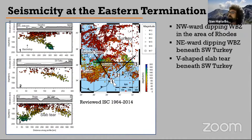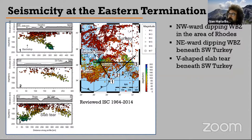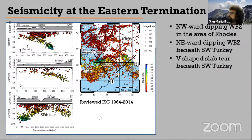Moving to the eastern termination, which is more relevant for today's workshop, we see beneath the Rodos area a clear northwest-dipping Wadati-Benioff zone, which is not compatible with a step fault along the Pliny Trench — because if a step fault were there, we would not expect subduction in that direction, yet seismicity shows it. We also see a northeast-dipping slab beneath Turkey, the Antalya slab, and between them an area depleted in intermediate-depth seismicity corresponding to the slab tear. This allows us to refine the geometry of the tear down to 180–200 km depth.